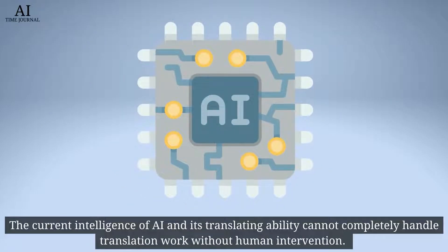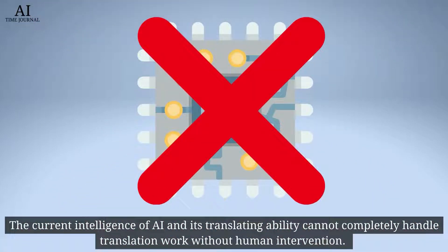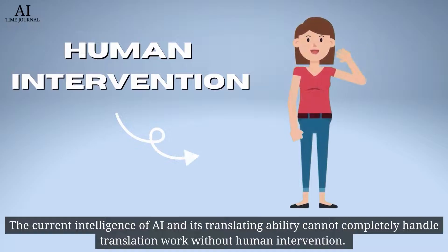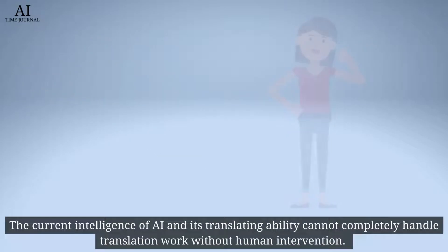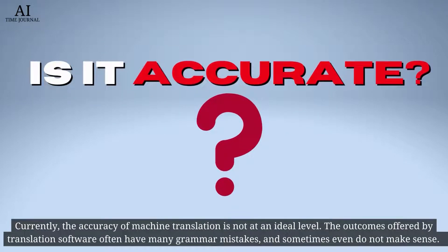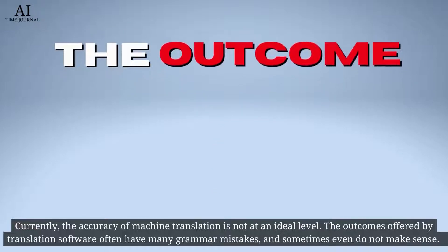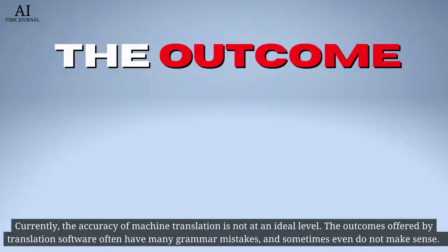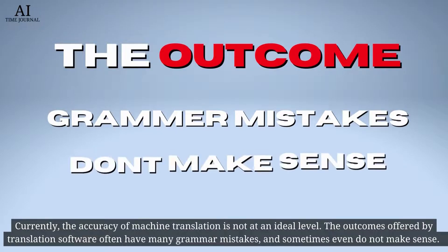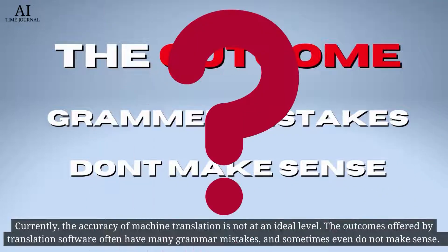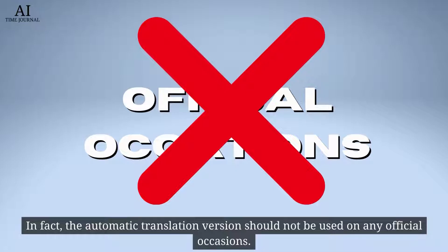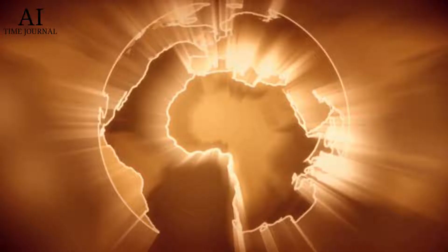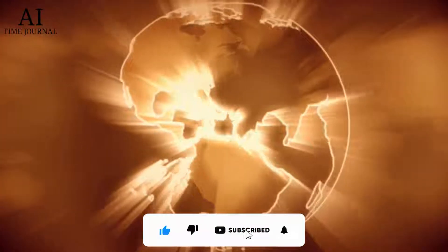The current intelligence of AI and its translation ability cannot completely handle translation work without human intervention. Currently, the accuracy of machine translation is not at all an ideal level. The outcomes offered by translation software often have many grammar mistakes and sometimes even do not make sense. In fact, the automatic translation version should not be used on any official occasion.